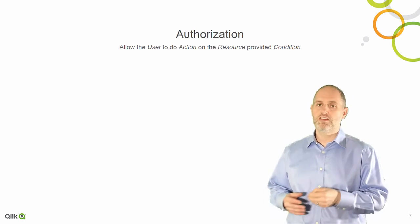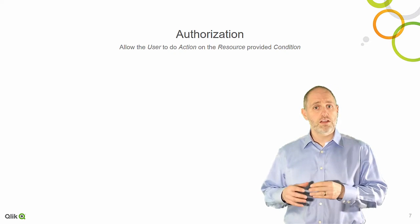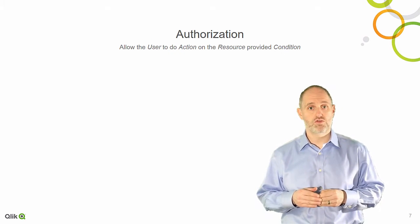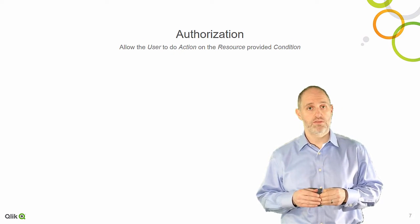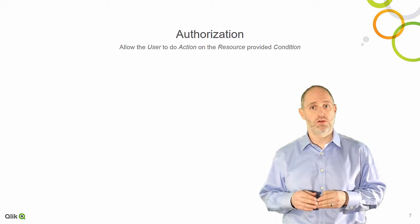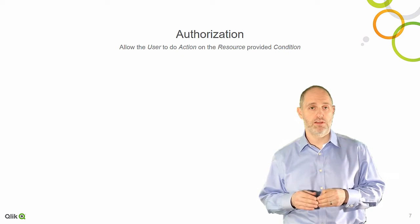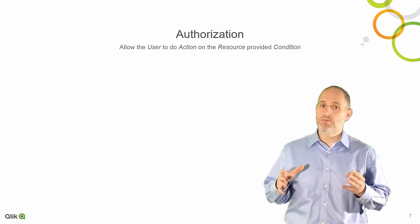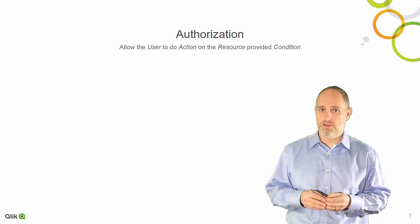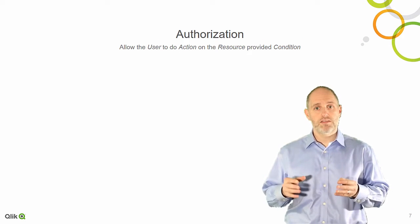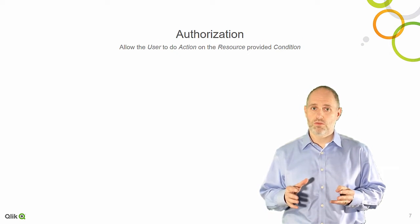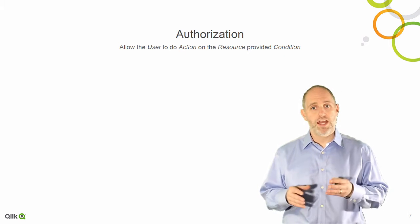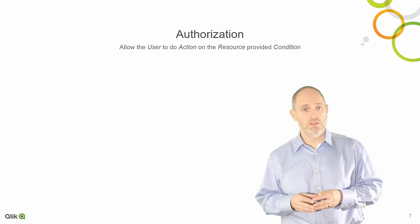Taking a deeper look at authorization, Qlik Sense employs an attribute-based access control rules engine to execute access control and capabilities for users in a deployment. At the inception and throughout a user session, Qlik Sense monitors changes in security rules, processes them through the rules engine, and applies them to the user.